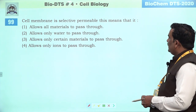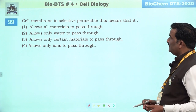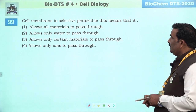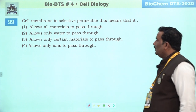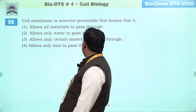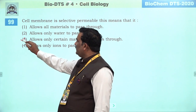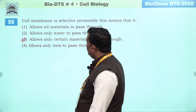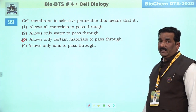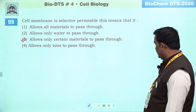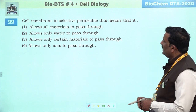Next question: cell membrane is selectively permeable — this means that it. Allow all material — no. Allow only water — this is no. Allow only certain material to pass through — kyunki ismein se doosre material bhi jaate hain water ke saath mein. Third is the right answer. Selectively permeable nature hone ke baad, agar semi-permeable hota toh sirf water ki baat hoti.